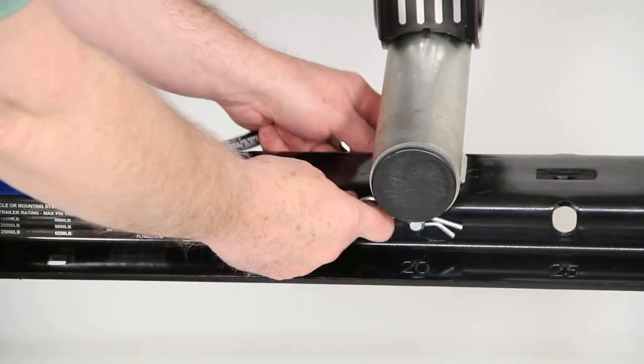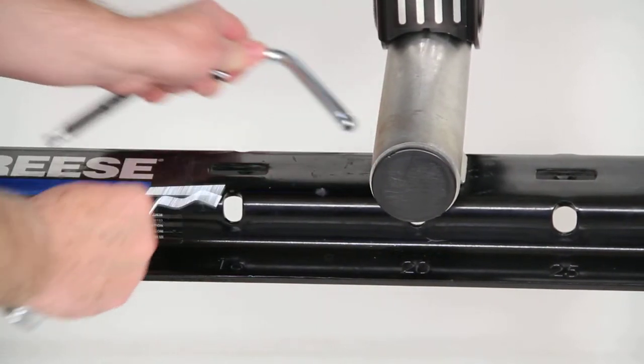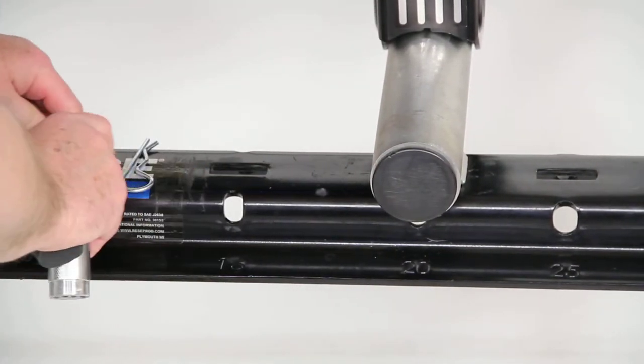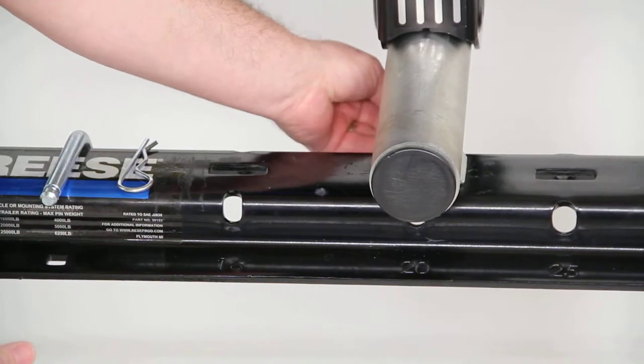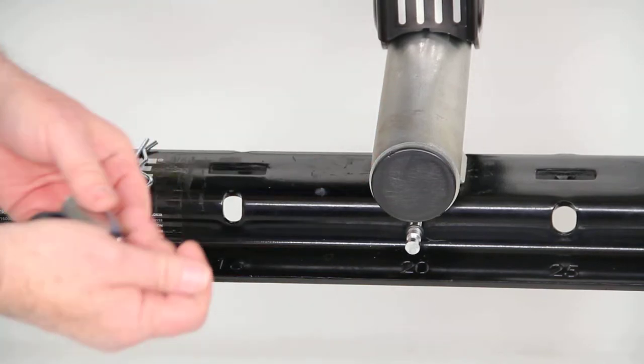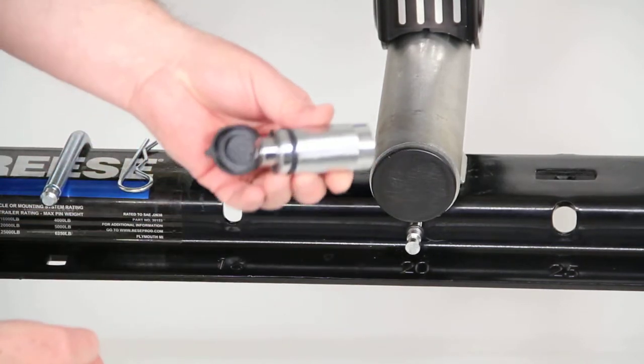So I'm going to pull the clip and pull that pin out. Then I'll take this bent pin and slide it through where that pin and clip was. Then take the key out and put this lock on the end.